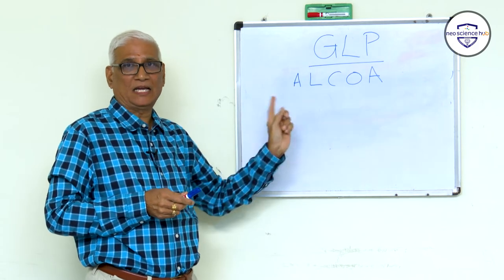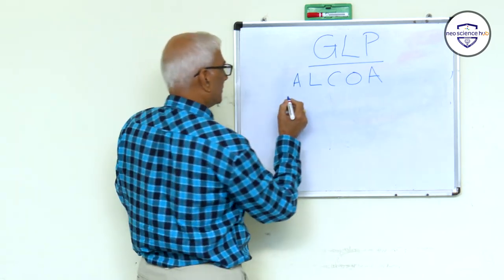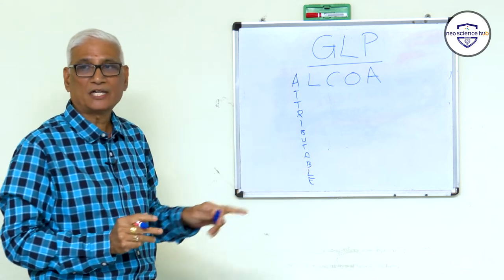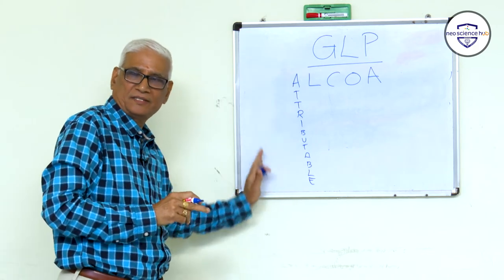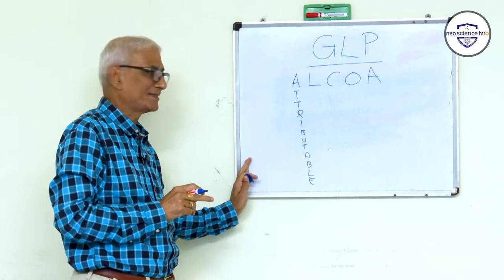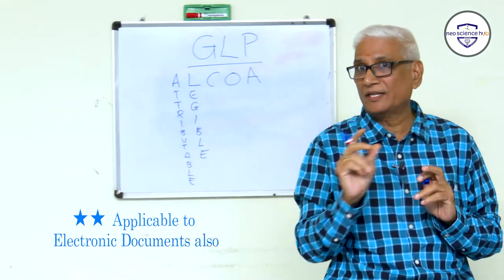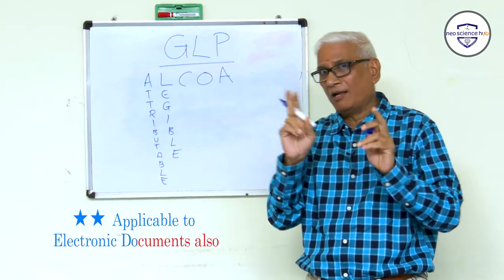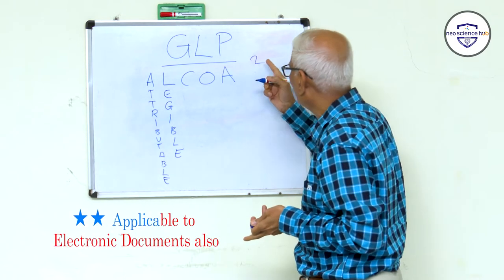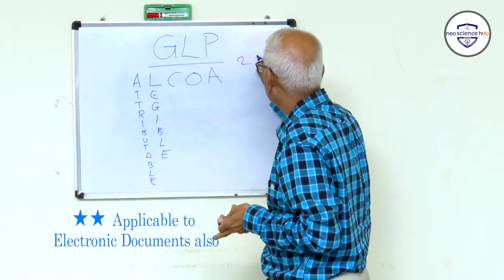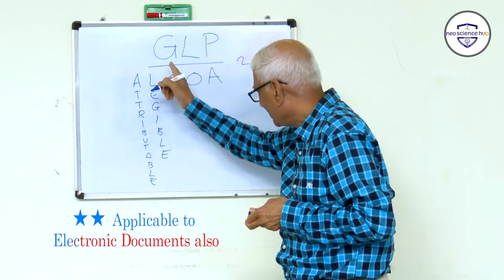ALCOA stands for A-L-C-O-A. 'A' is Attributable — meaning who has done the analysis or operation; the test is attributed to the person who performed it. 'L' is Legible — the numbers you write should be clear and readable by everyone in the same way. For example, if a number looks like either 2 or 3, that is not acceptable. Writing must be unambiguous — this is called legible writing and is part of ALCOA.